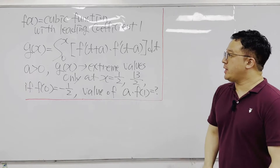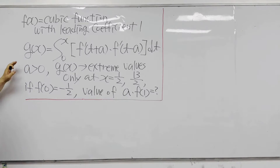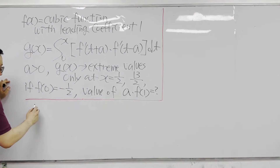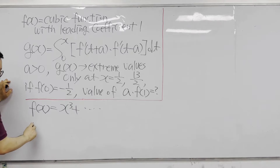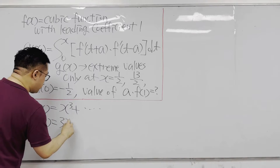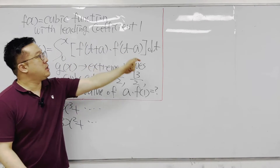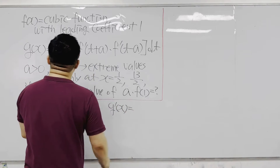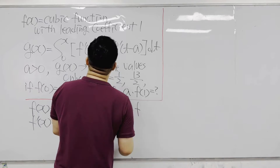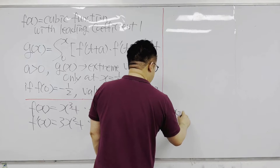Based on those conditions, we can think about f(x) in general. f(x) is given to be a cubic function with a leading coefficient of 1, so f(x) looks like x³ plus something, which means f'(x) looks like 3x² plus some terms. Since g(x) is the integral from 0 to x, we can represent g'(x). So g'(x) is equal to f'(x+a) times f'(x-a).